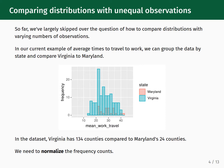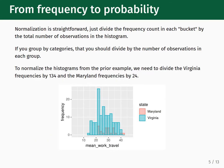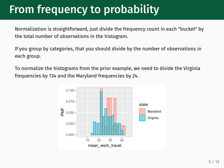In order to answer our question, we need an apples-to-apples comparison. In order to have that, we need to normalize the frequency counts. The process of normalization is straightforward — all you need to do is divide the frequency count in each bucket by the total number of observations in the histogram. If you are grouping by categories, then you will need to divide by the number of observations within each group. For example, to normalize the histograms from the prior example, we will need to divide the Virginia frequencies by 134 and the Maryland frequencies by 24. Once we do this, the visualization will look like this.